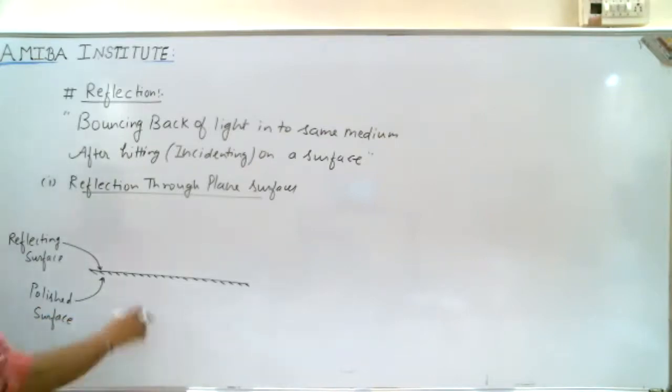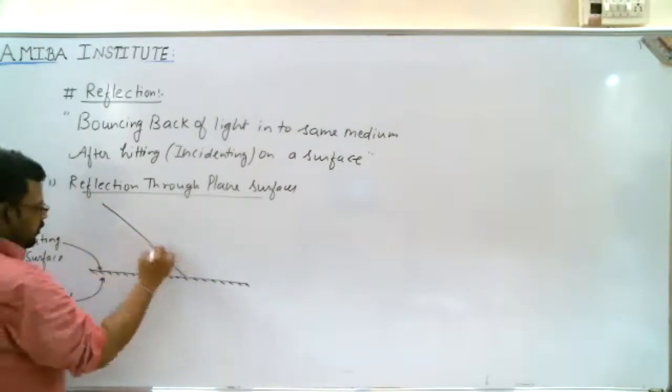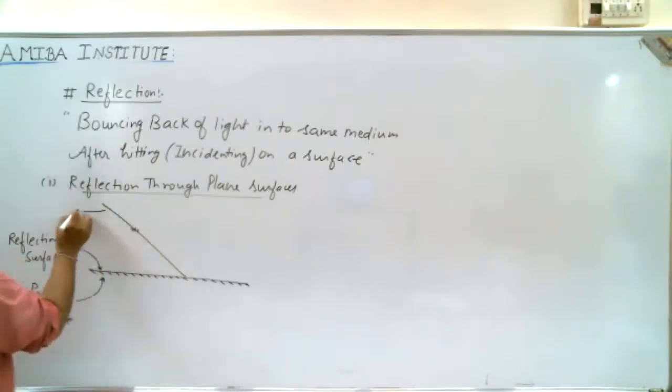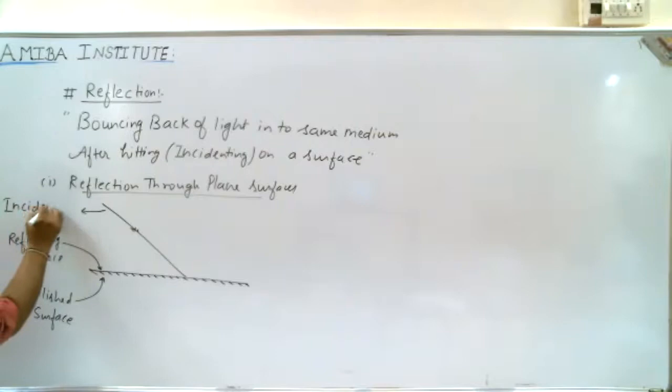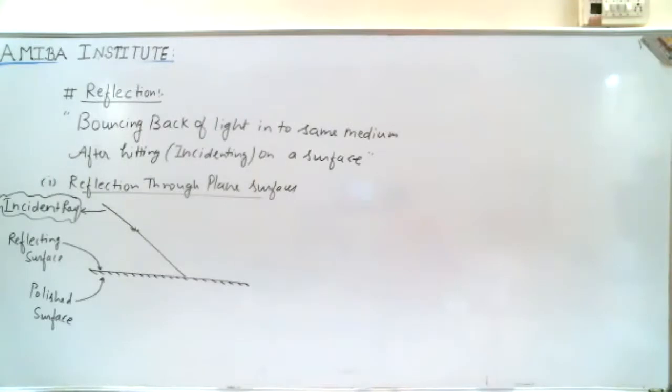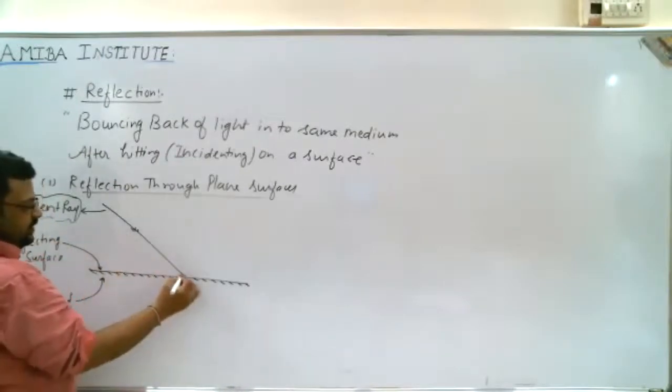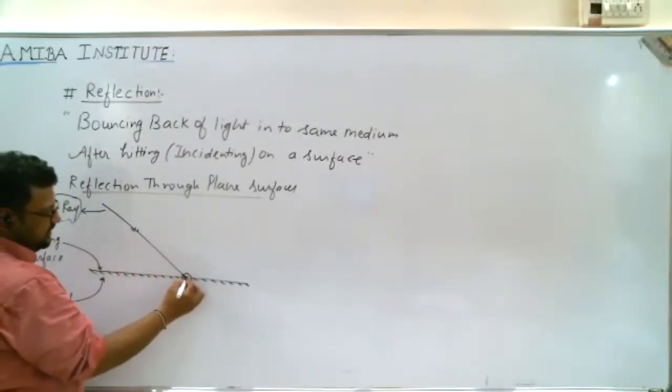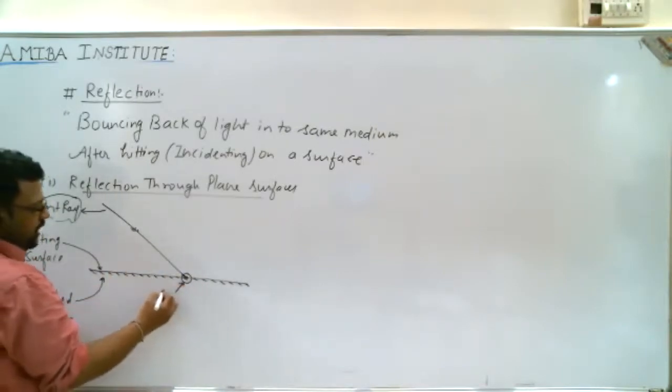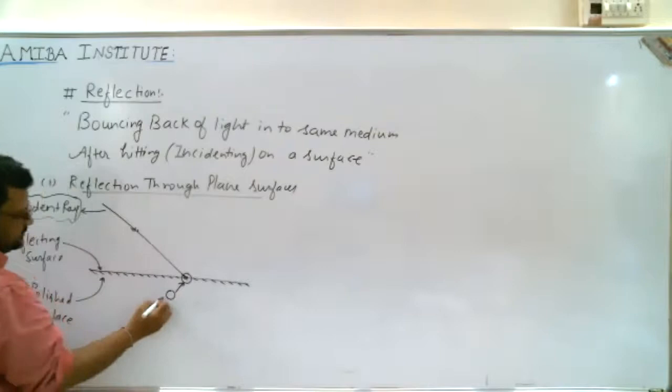The light ray which hits the reflecting surface is called the incident ray. Now we are studying ray optics here - ray means light traveling in one direction. This incident ray hits the surface at a point which we call O, and this is the point of incidence.